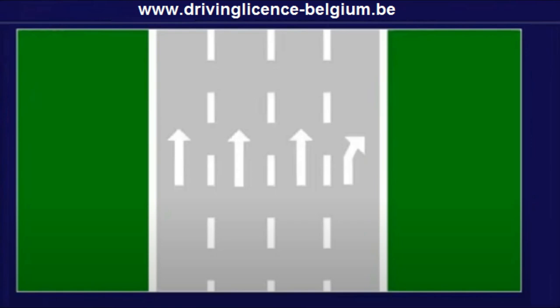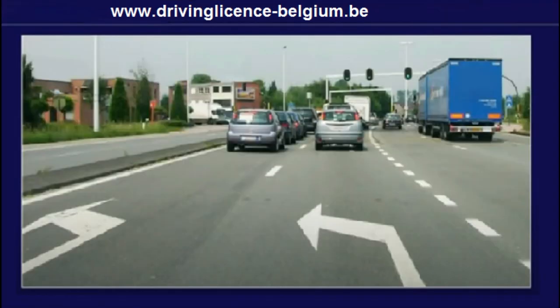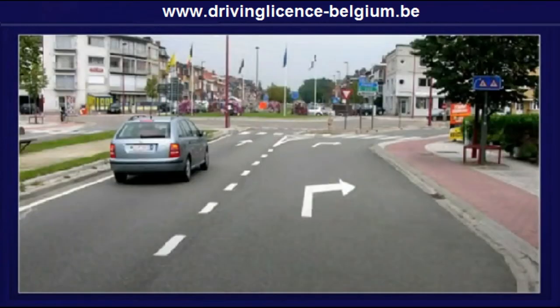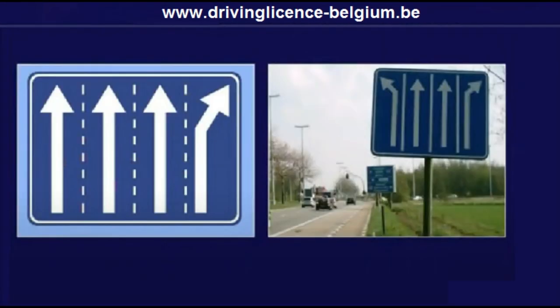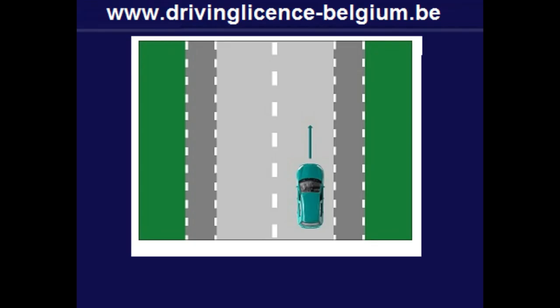Arrows on the Lanes. Sometimes you come across arrows painted on the road surface near a junction. These arrows are also road markings. The arrows show you the direction you need to follow. If there are more lanes, you will find this blue sign placed next to the road.